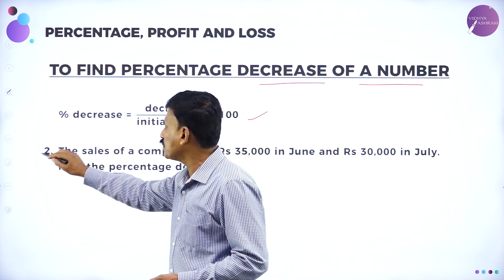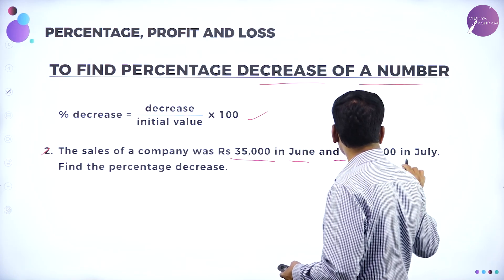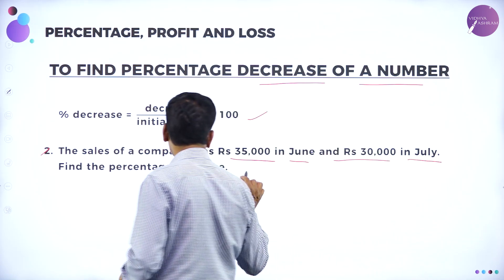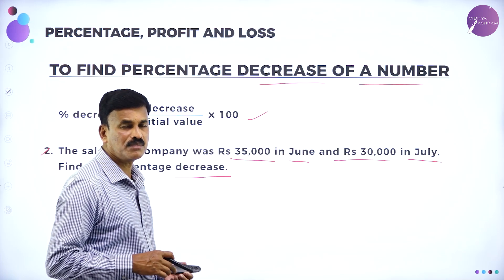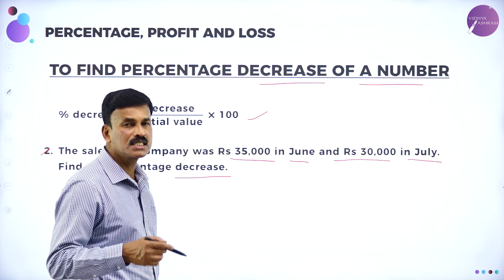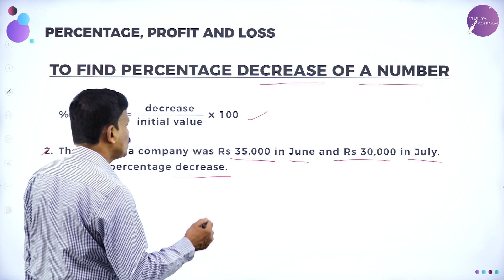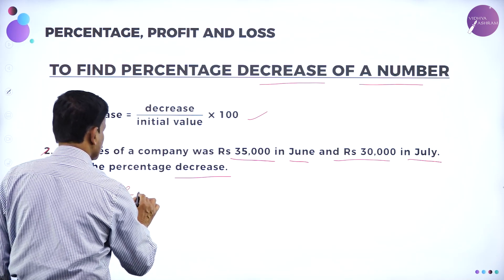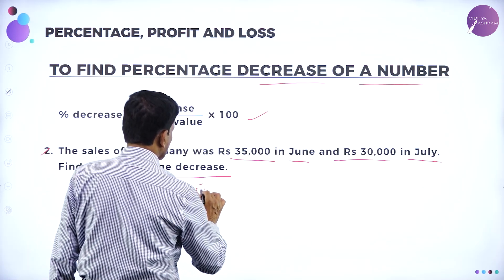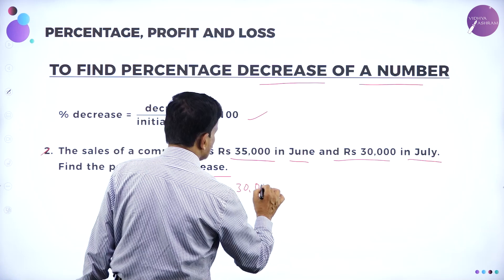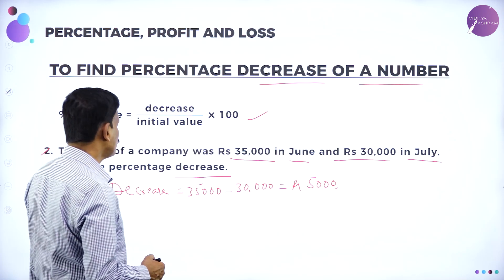Now let us take a small example. The sales of a company were rupees 35,000 in June and rupees 20,000 in July. Find the percentage decrease. In June it is 35,000, whereas in the next month July it is 30,000 — that means 5,000 is the decrease. The decrease amount: decrease is equal to 35,000 minus 30,000, that is equal to rupees 5,000.